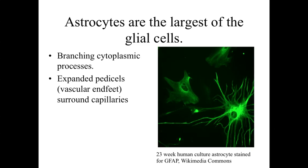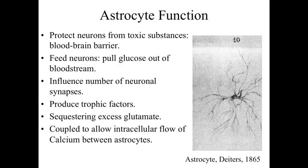Astrocytes interact with the capillaries within the nervous system, essentially wrapping around them. Because of this, it was thought initially that the sole purpose of astrocytes was to regulate blood vessels and establish what's referred to as the blood-brain barrier. The diagram on the right-hand side is from Deiters, about 1865, showing an example of an astrocyte — and the original function was thought to be establishing and maintaining the blood-brain barrier.